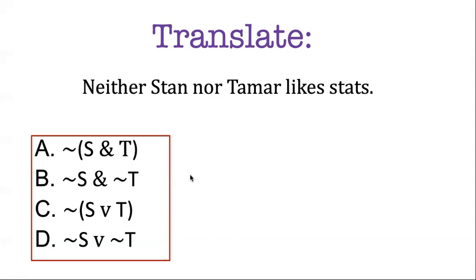There's another good answer though — B is not the only correct answer. D is not correct, because it says either Stan doesn't like stats OR Tamar doesn't like stats, but that doesn't require both. C is the other correct answer: "it's not the case that either one likes stats," which really means they both don't like stats. B and C are both correct not because the English is ambiguous, but because they actually mean the same thing in Bool — they're logically equivalent.